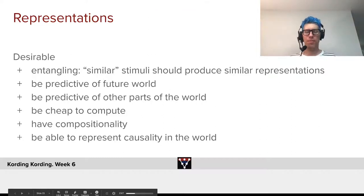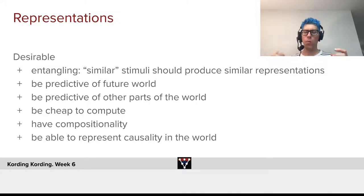So what is desirable in a representation? The first one is a disentangling objective, where what I want is that similar stimuli produce similar representations, because that makes learning the final recognition much better.